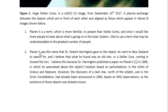The second reason is that Planet X was the name that Dr. Robert Harrington gave to the object he went to New Zealand to search for, and I believe that what he found was an old star, a stellar core, coming in towards the Sun. Dr. Harrington published a paper on Planet X in 1988 in which he speculated about this object's location based on perturbations in the orbits of Uranus and Neptune.